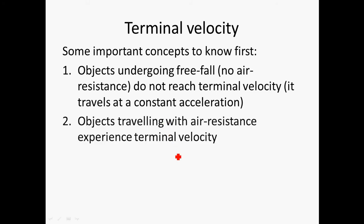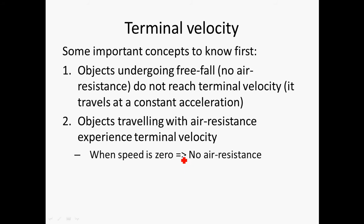The second case is where terminal velocity does occur: when an object travels in a situation where there is air resistance — that means it travels in air — it will definitely experience terminal velocity. If there is no speed, meaning the object is at rest, there will be no air resistance, because if you are not running into the air, the air cannot oppose your motion.